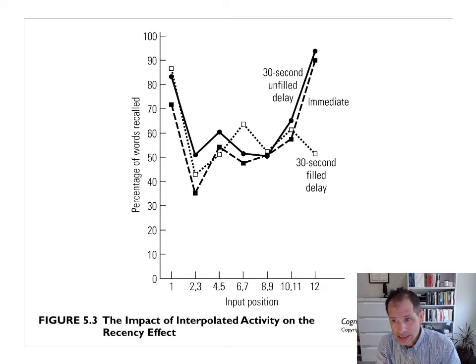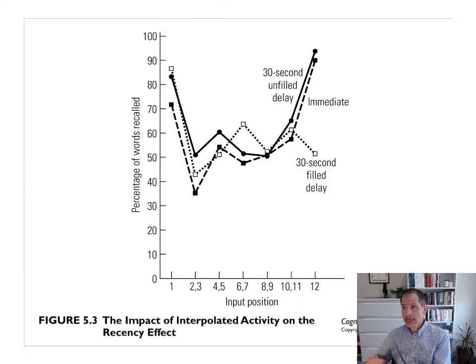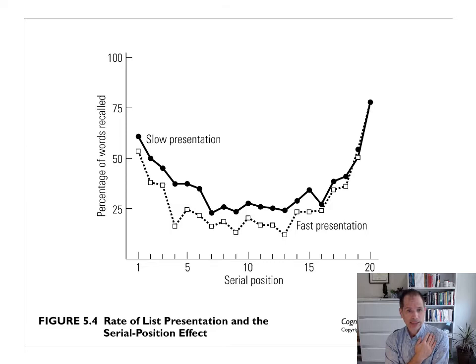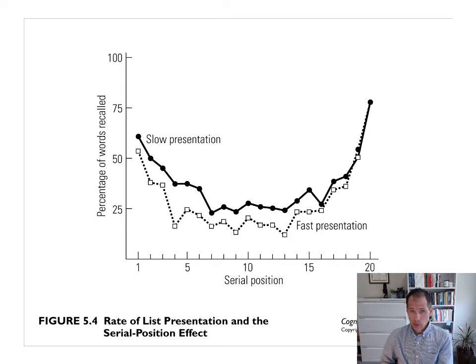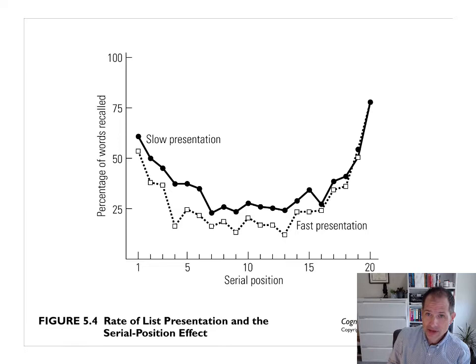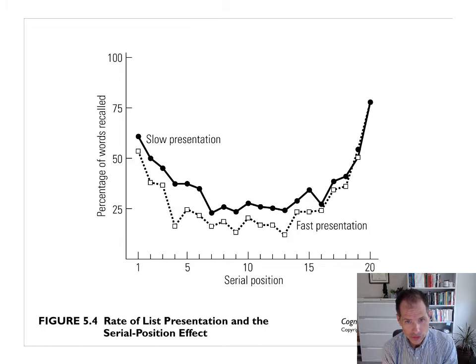What could we do that would affect the primacy effect but not the recency effect? One thing would be something that inhibits your ability to rehearse the words at the beginning — something that makes it harder to start saying those words to yourself as you hear them. One thing you can do is speed up the presentation. If we present words at the normal rate — that's the solid line, the slower presentation — you see both a primacy and a recency effect. If we present words at a faster rate, it seems to interfere with performance on the primacy effect and in the middle, but at the end, when those words are still active in sensory memory, they can still be recalled.